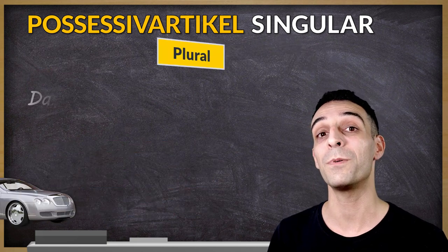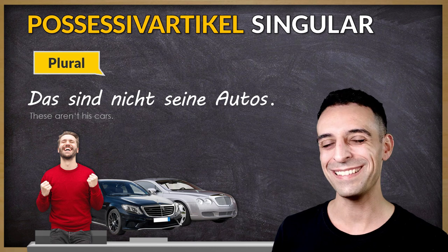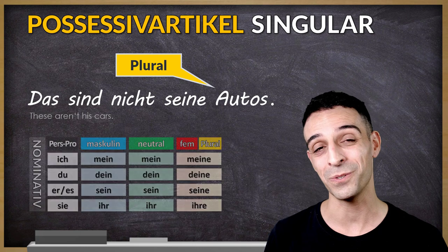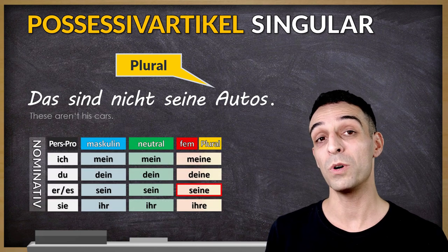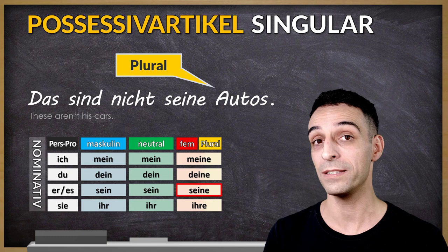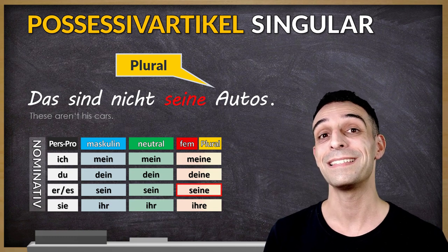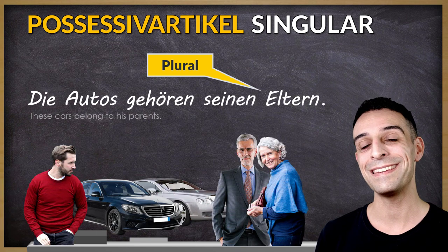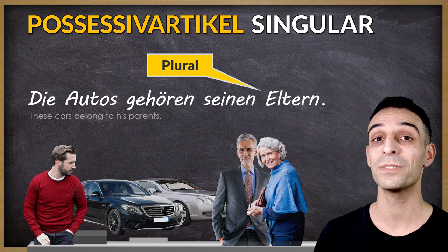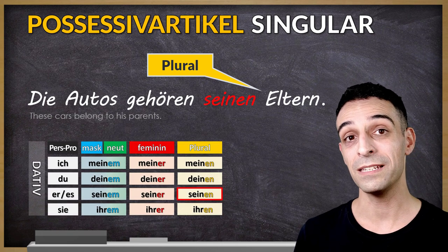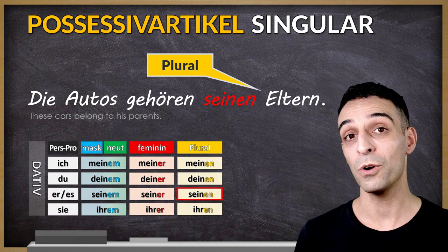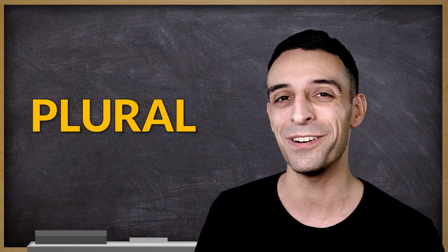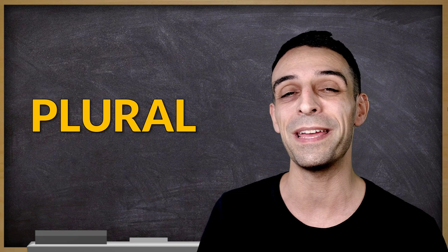My next example is in plural. Das sind nicht seine Autos. Autos, plural, nominative case, because the cars are the subject: seine. Die Autos gehören seinen Eltern. Eltern is in dative case here because I use the verb gehören. I think we made enough examples for the singular forms.